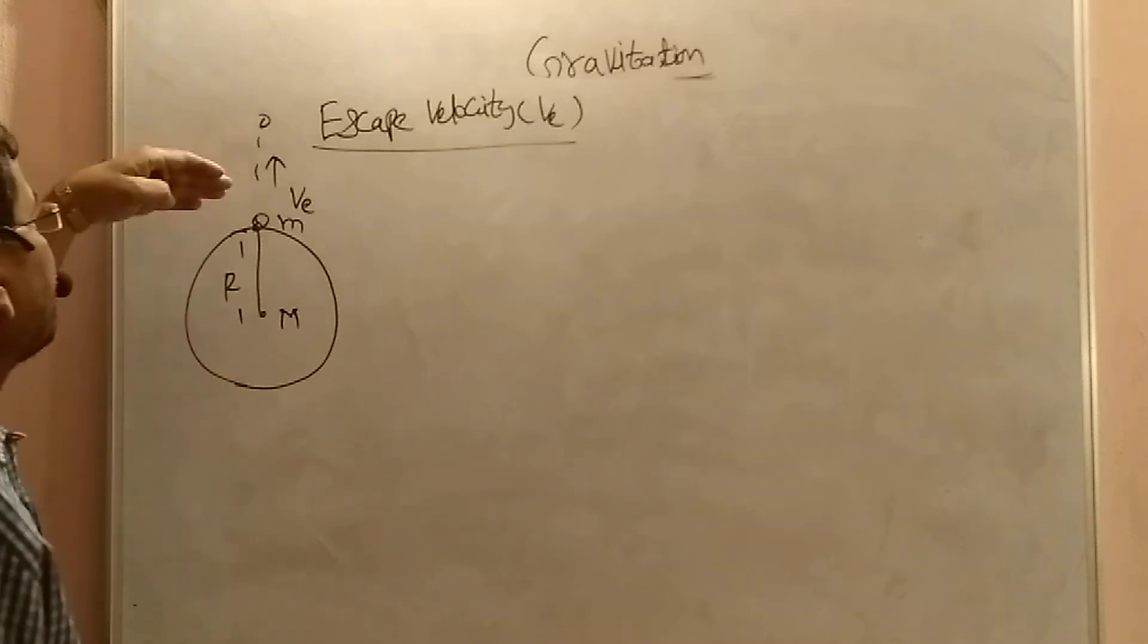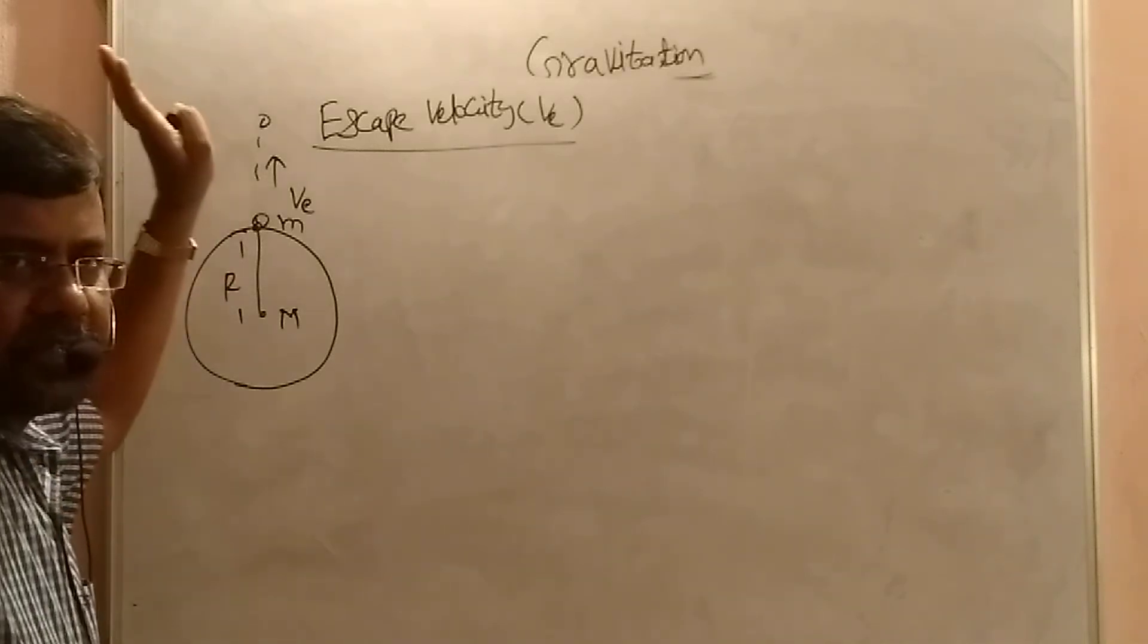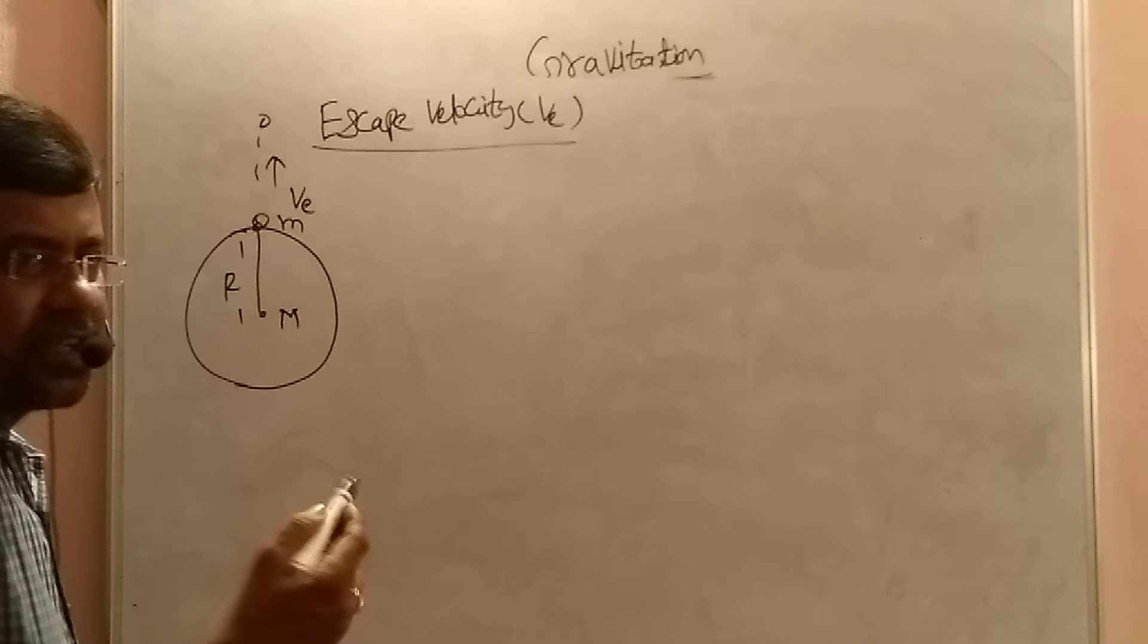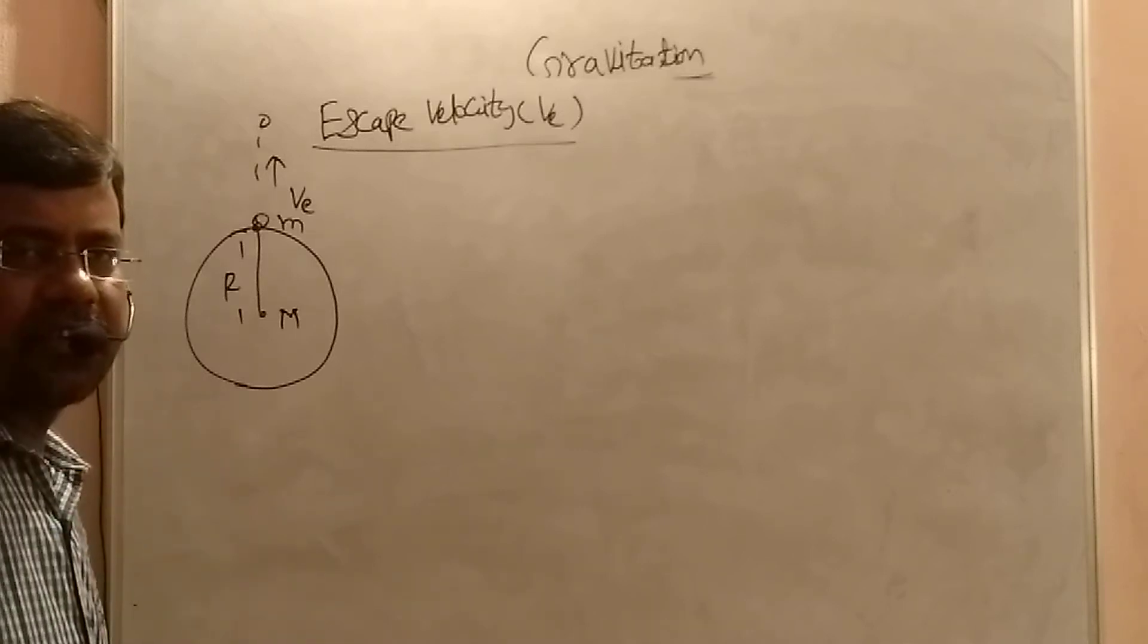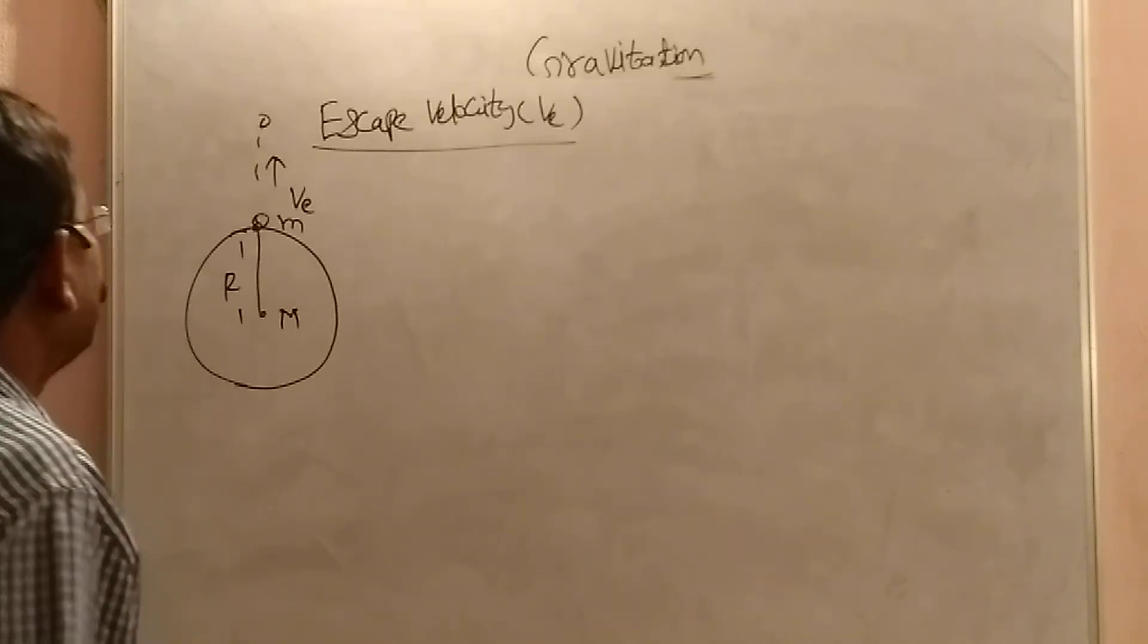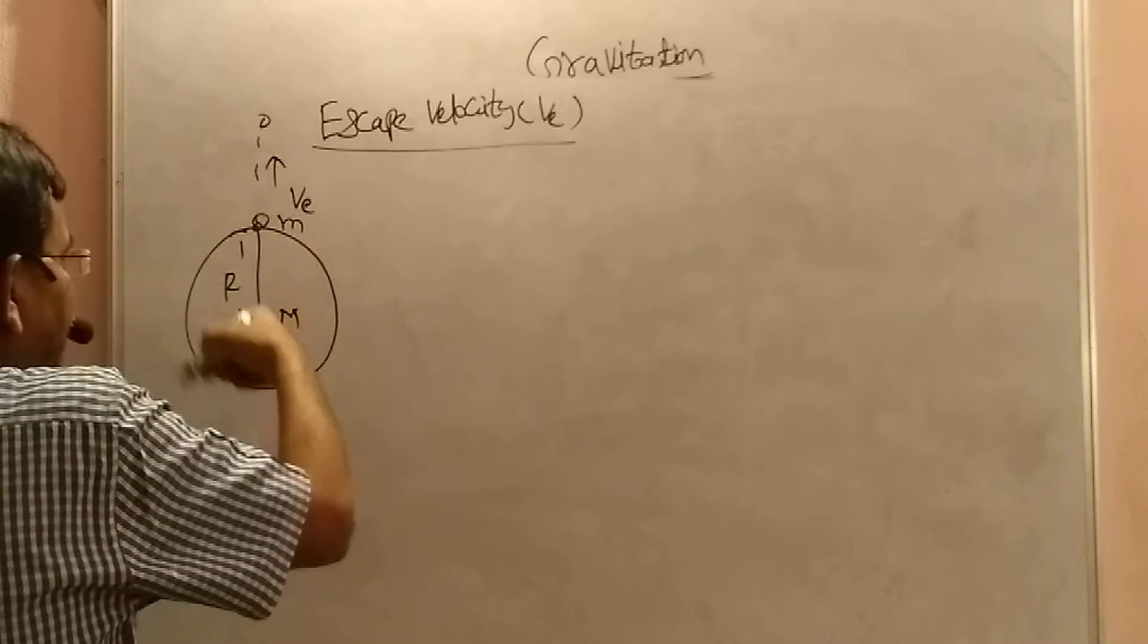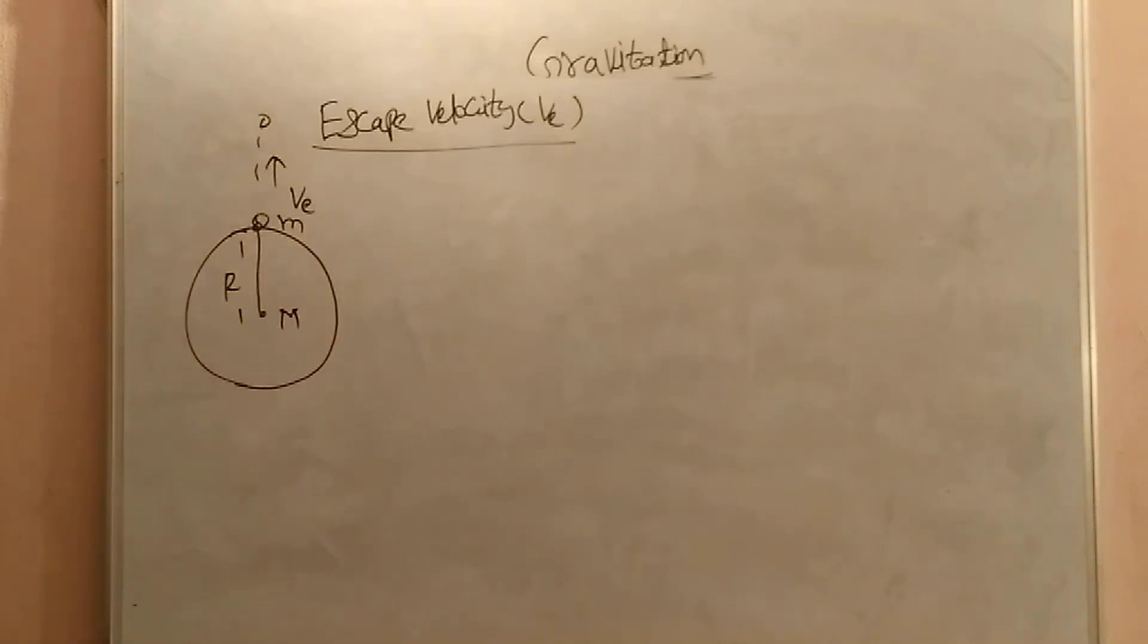Now I want to send from the surface of the earth to a particular orbit. At that time, you must give some velocity. That velocity is called escape velocity. Now, if you have any body on the surface of the earth, it is having some potential energy. That is called gravitational potential energy.